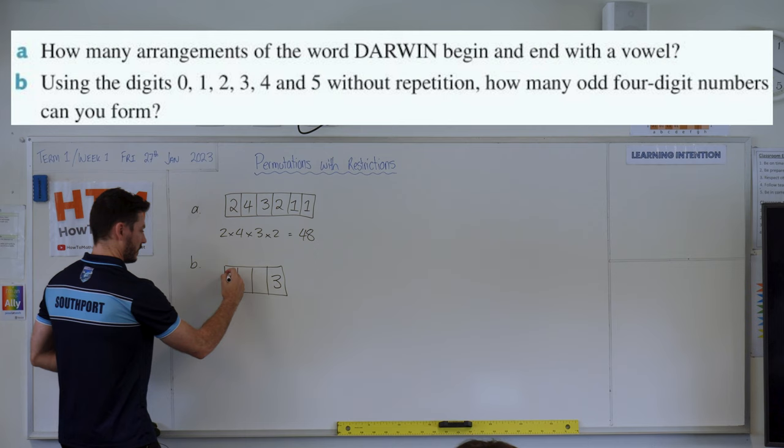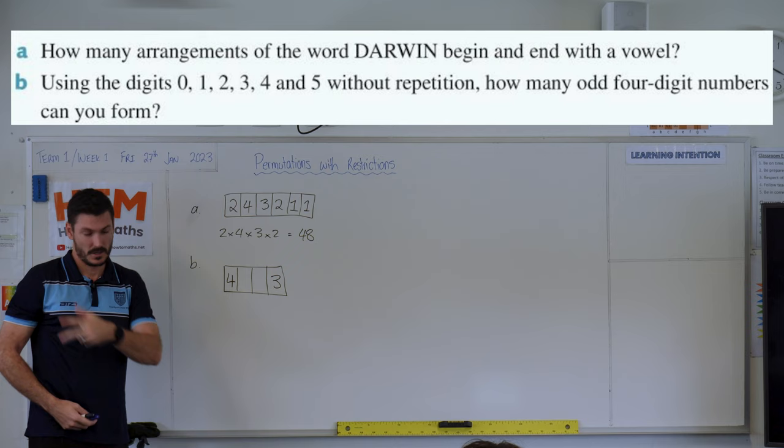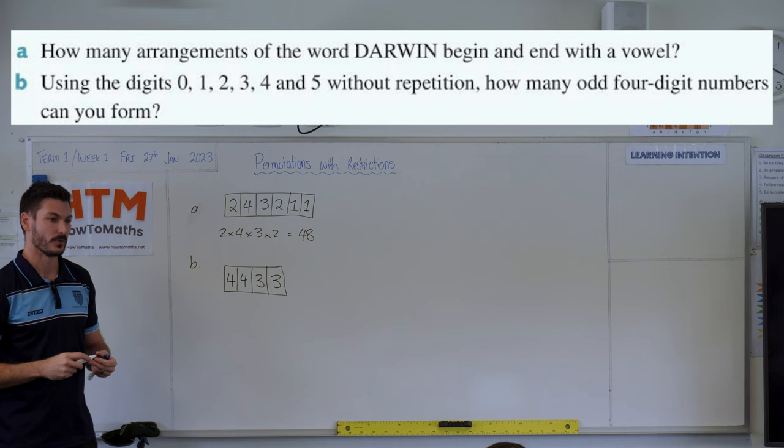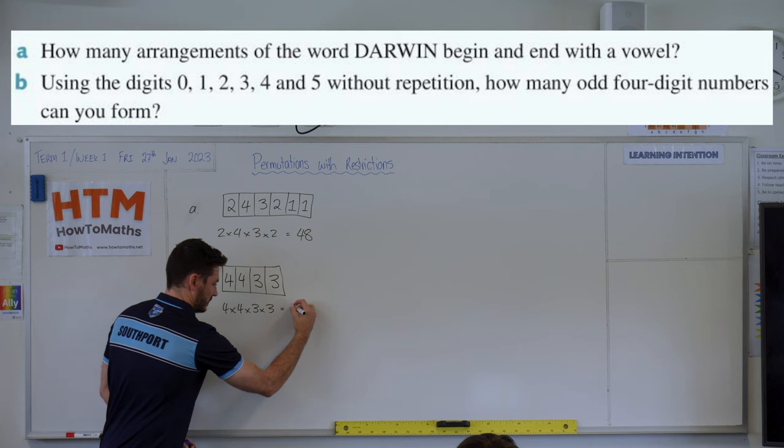Gets tricky though, because we can't just go 3, 2, because in the second digit we can use zero. Yeah, so we've used one of the odds, we've used another number. We've got four again, and now it's three. So 4, 4, 3, 3. So we've got 4 times 4 times 3 times 3. 16 times 9 is probably 144. Give or take zero, plus or minus zero.